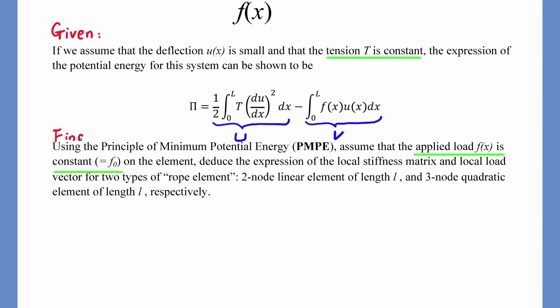You need to find, by principle of minimum potential energy (PMPE), the local stiffness matrix K and load vector R for two types of element.